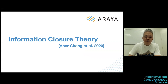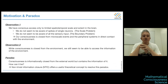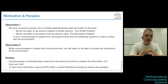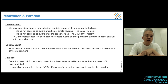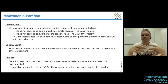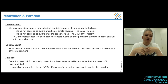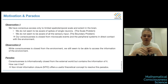Now I move on to Information Closure Theory. First I want to explain the motivation behind building this theory. It comes from two observations and a paradox. The first observation is that our consciousness seems to be limited both in terms of space and time. This statement is related to the scale problem and the boundary problem of consciousness. What we have access to from the inside of the conscious mind seems to be very limited — we don't have access to micro-scale information or bigger-scale information.